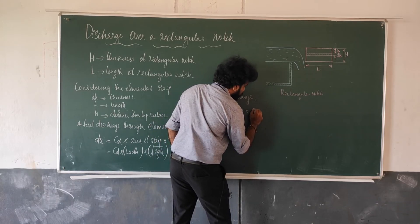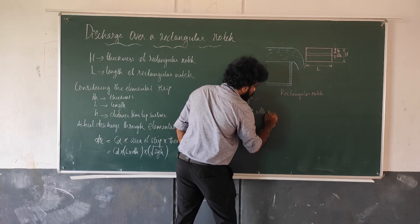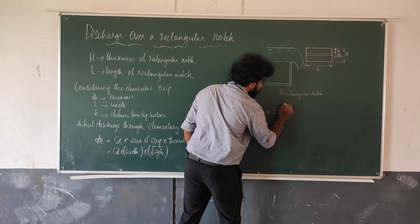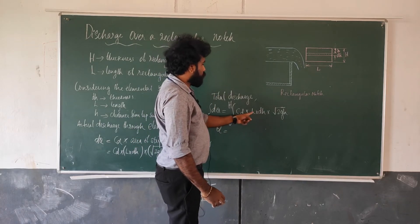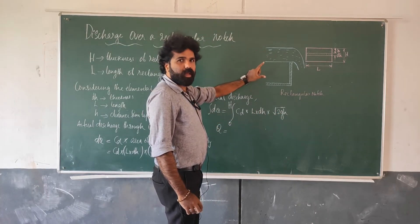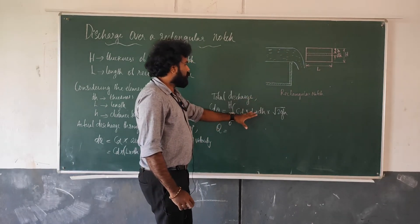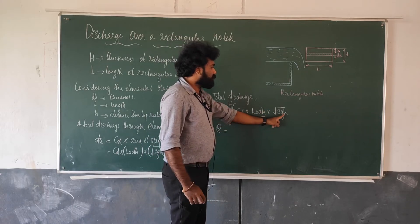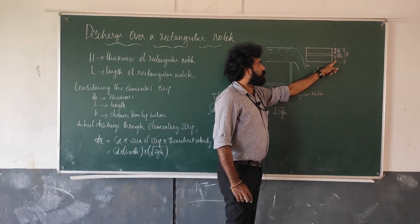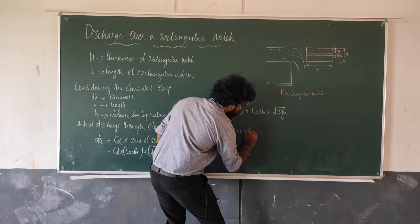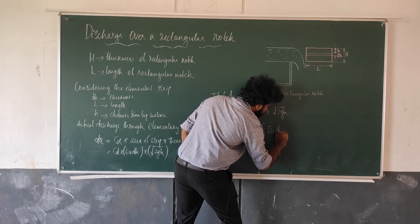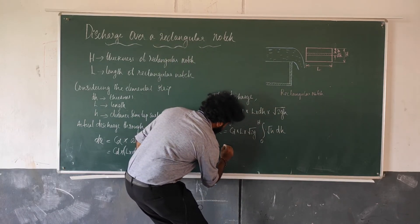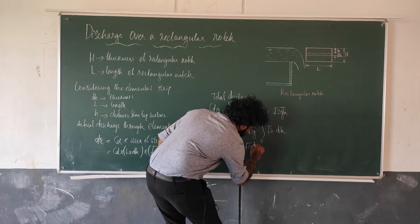The area of the rectangular section is L × dh. The theoretical velocity formula is the root of 2gh. So we have: dQ = Cd × area (L × dh) × theoretical velocity (√2gh). The total discharge of the rectangular notch is found by integrating: Q = integral of dQ from 0 to H, where the maximum thickness is capital H. So Q = integral from 0 to H of Cd × L × dh × √(2gh).